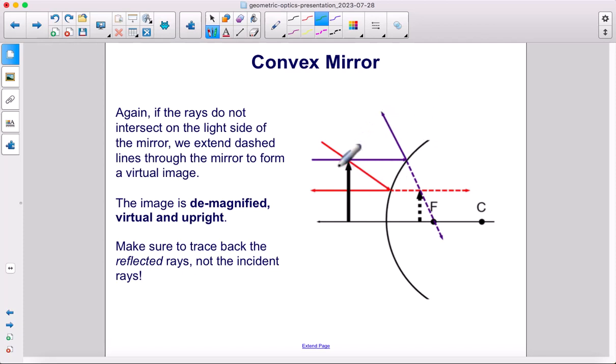So here, the purple ray, it bounced off the mirror this way, which means we trace back the reflected ray through the focal point. The red ray here, it bounced off this way, which means we are going to dash back the reflected ray. And that is going to give us our image.